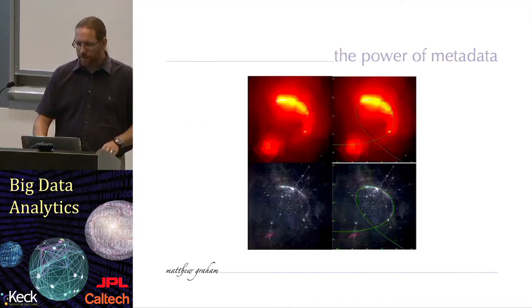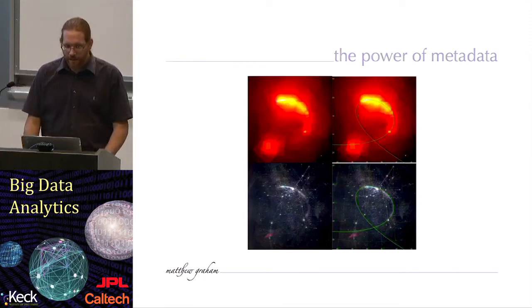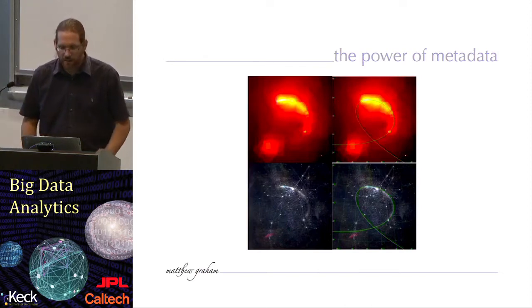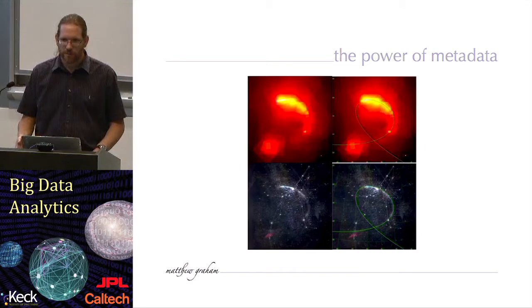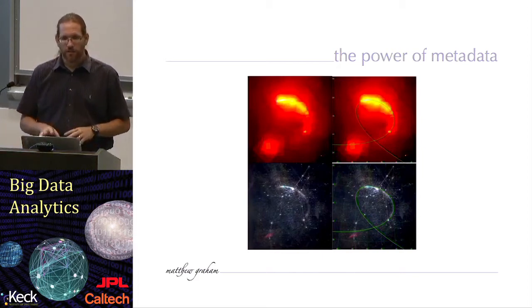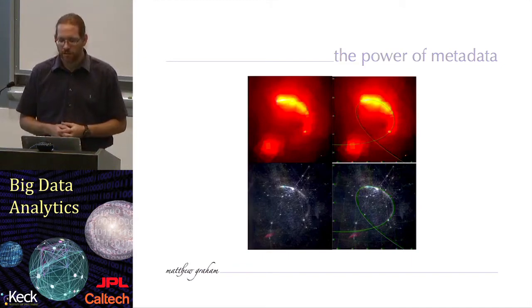An example of the power of metadata over data is in the left-hand side, you can see images of Comet Holmes 17P. This is a comet that was observed in 2007. Many people posted images on Flickr that they had taken with cell phones and very amateur cameras of the comet.